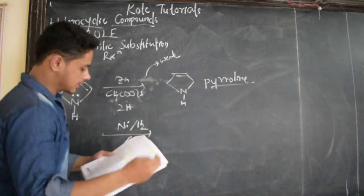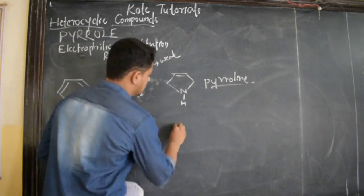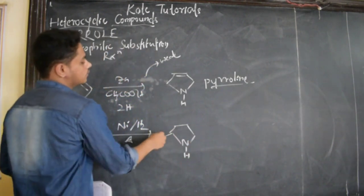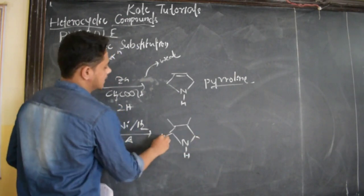Nickel in presence of hydrogen when heated acts as strong reducing agent, and we get the same component - that is tetra, four hydrogens are added.